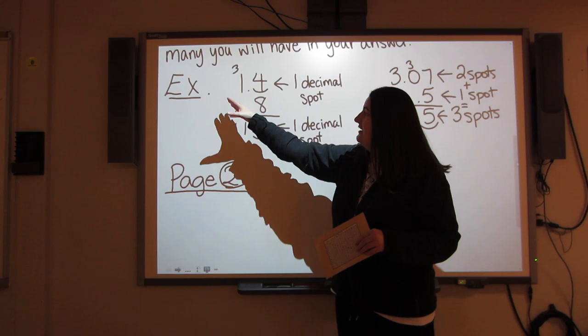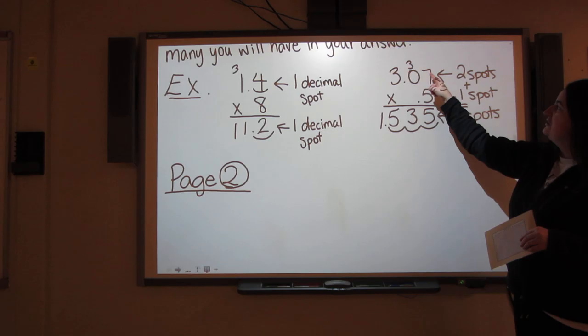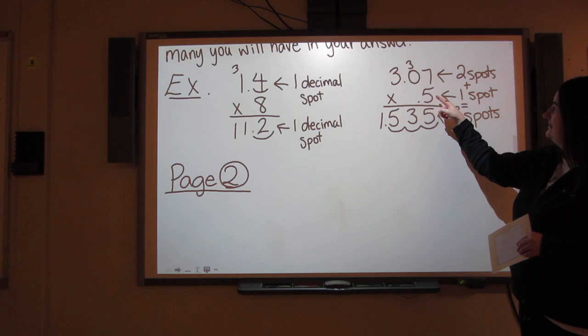Here's some examples. In this case here, I have one decimal spot, the four, in my question. So I'll have one decimal spot, the two, in my answer.